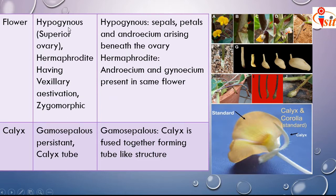The flower is hypogynous. When the sepals, petals, and androecium rise beneath the ovary, the condition is called hypogynous ovary, and the alternate name for the hypogynous ovary is superior ovary. The groundnut flower is also hermaphrodite, meaning both androecium and gynoecium are present in the same flower. It is also a complete flower because androecium, gynoecium, calyx, and corolla are all present.